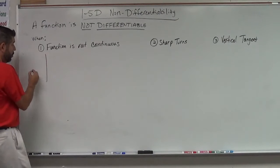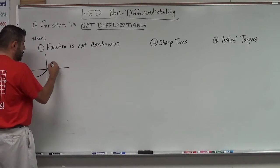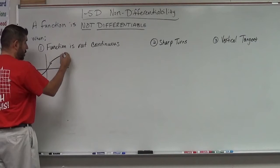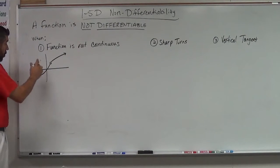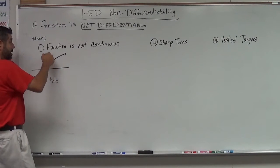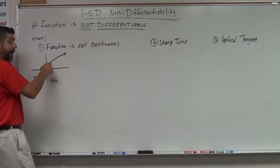So let's take a look at a couple examples. So one example would be when we have a jump discontinuity—I'm sorry, a hole in the graph, which is a removable discontinuity. So if we have a hole, that's not differentiable at wherever that value is.